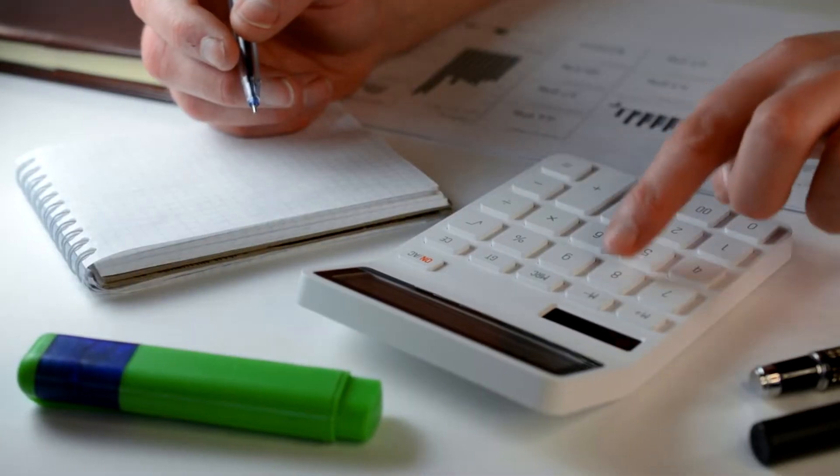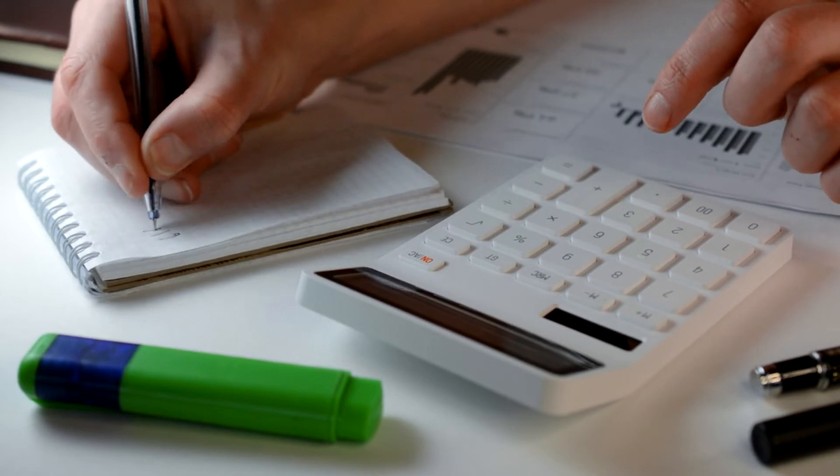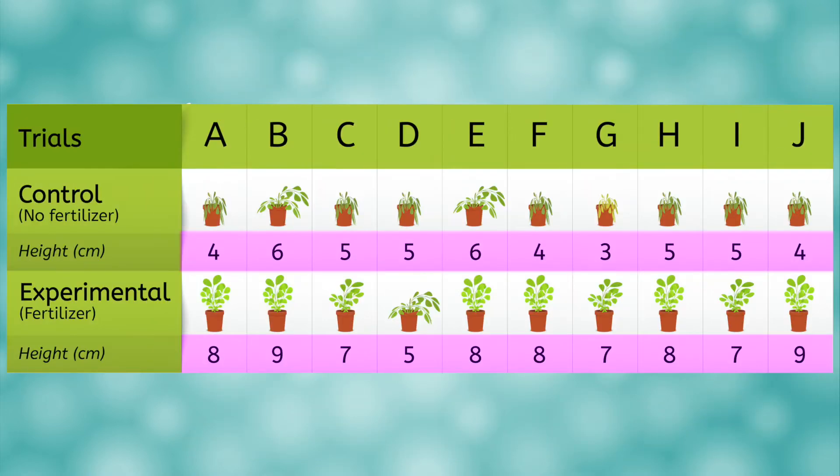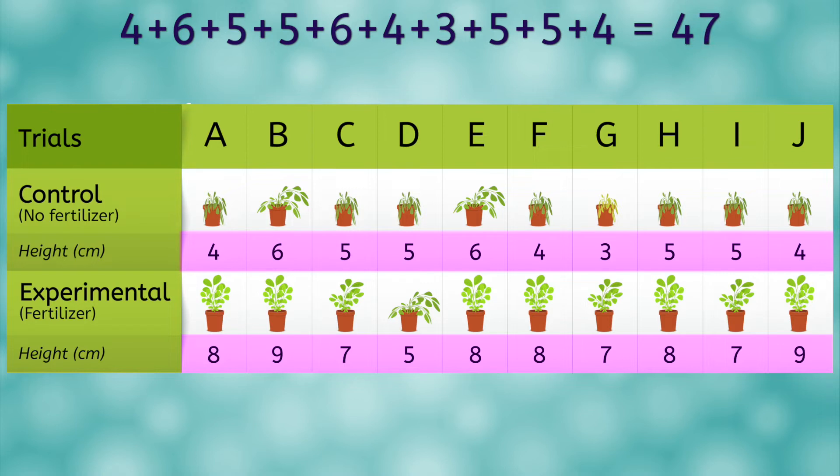A very useful calculation that you will often make with your data is an average. To calculate an average, sometimes called a mean, we simply add up all of our data values, then divide that sum by however many data values we had. We will need to do this individually for the control and experimental group. For our control group, our data values were 4, 6, 5, 5, 6, 4, 3, 5, 5, and 4. We add these numbers up to get 47. Because there were 10 total data values, we divide by 10 to get an average of 4.7.